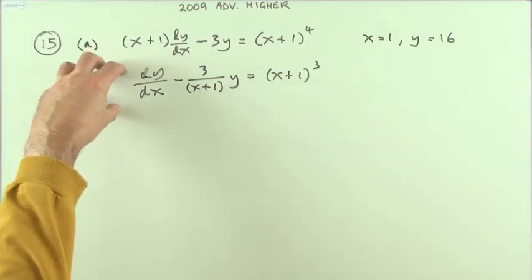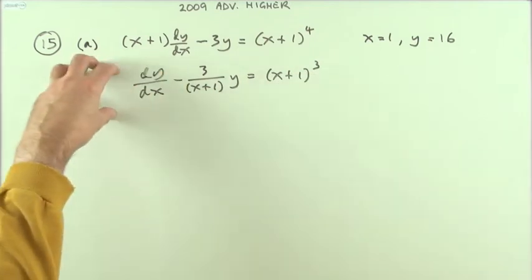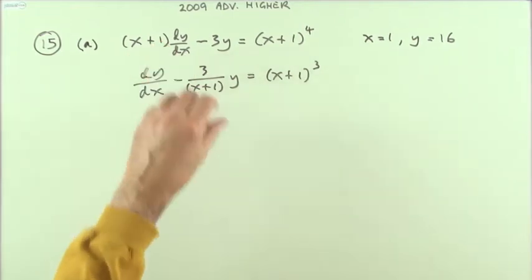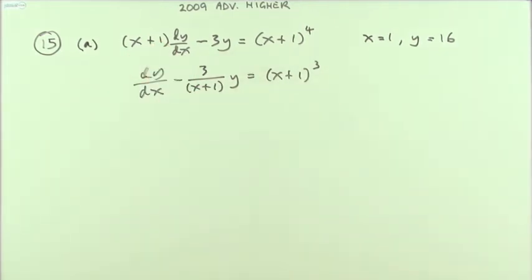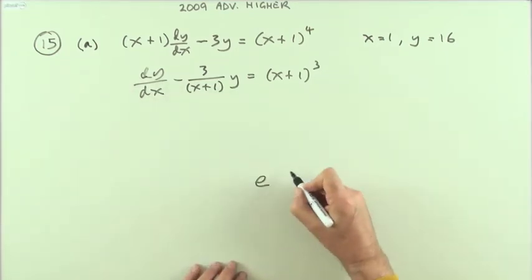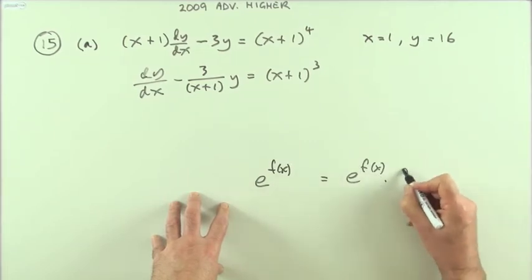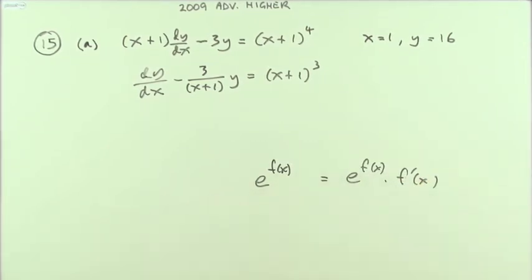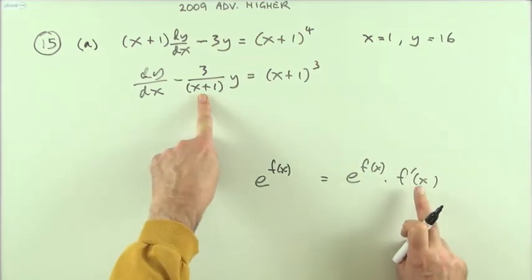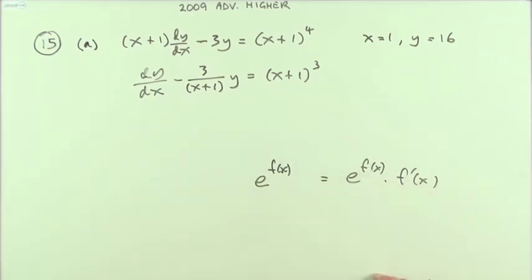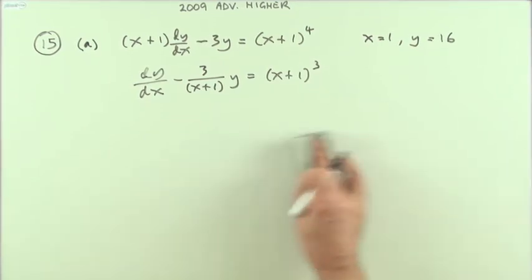The integrating factor method asks: is there something I can multiply by so that when it multiplies those parts, the result has a product rule form as its derivative? The only thing that works for this is e — if you've got e to some function and you differentiate it, you get e to that function times the derivative of the inner function. That's the pattern I want to establish, meaning I'm going to integrate that back up.